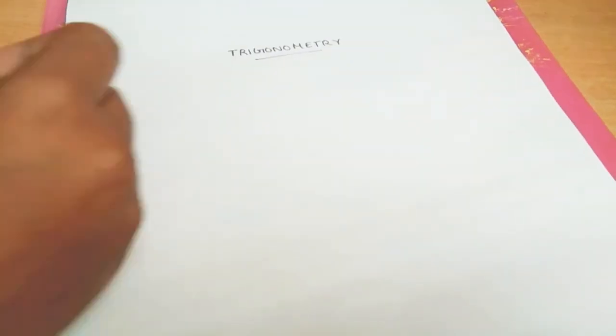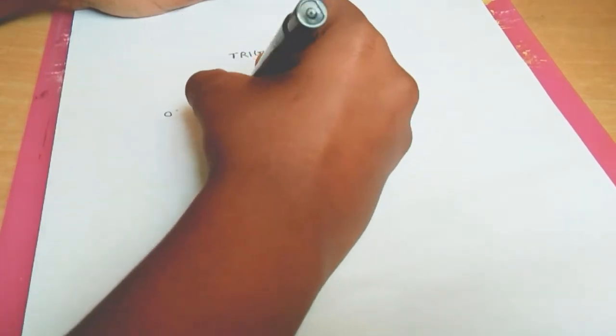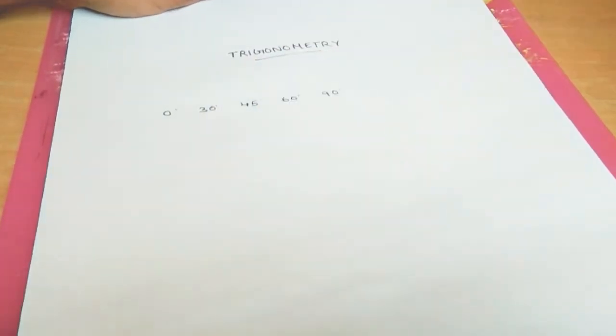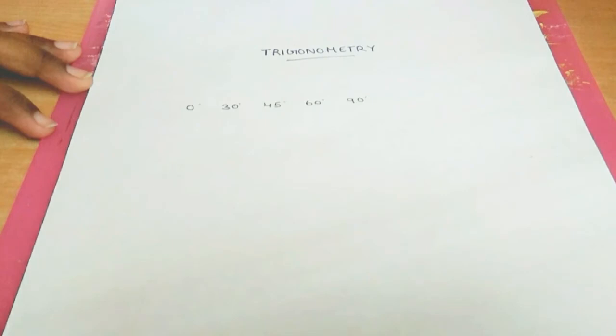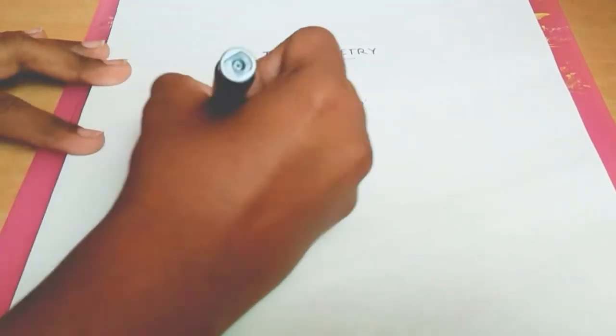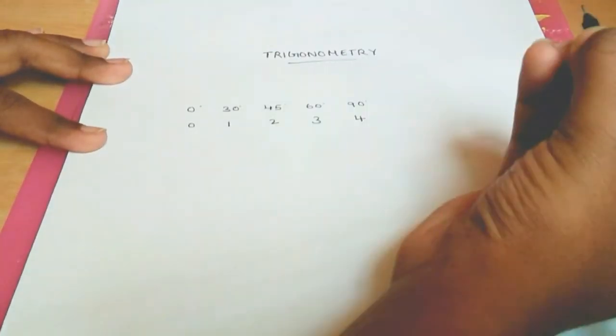Most of us find trigonometry difficult, but here's the easiest hack to find out the value of standard angles. We know that the standard angles are 0, 30, 45, 60, and 90 degrees. First of all, write up the numbers from 0 to 4 so as to fill up the angles, and then divide the numbers by 4.